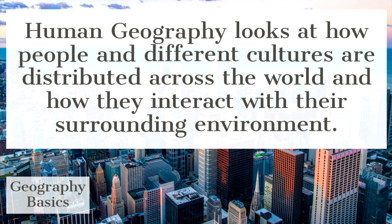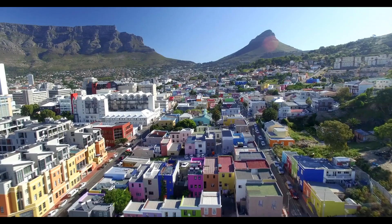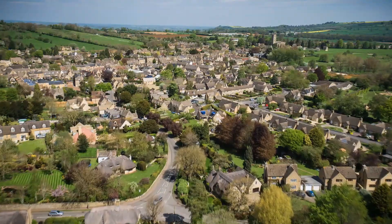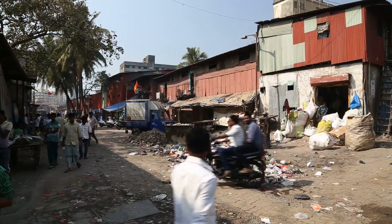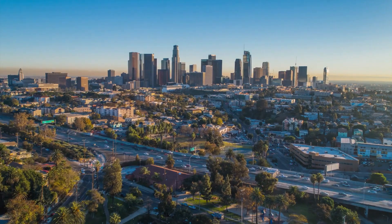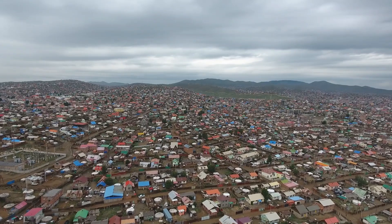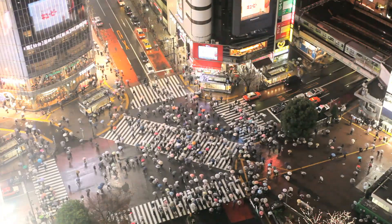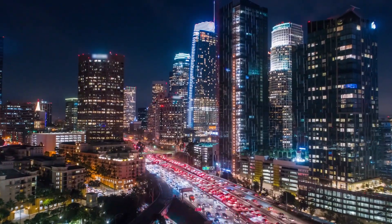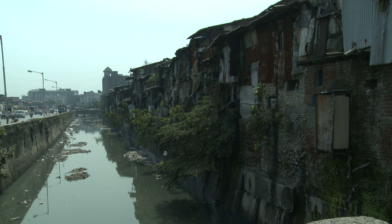Human geography looks at how people and different cultures are distributed across the world and how they interact with their surrounding environment. This will include urbanisation and settlements, asking the question of why we have settled in communities and why there is a growing trend of more people moving to cities.